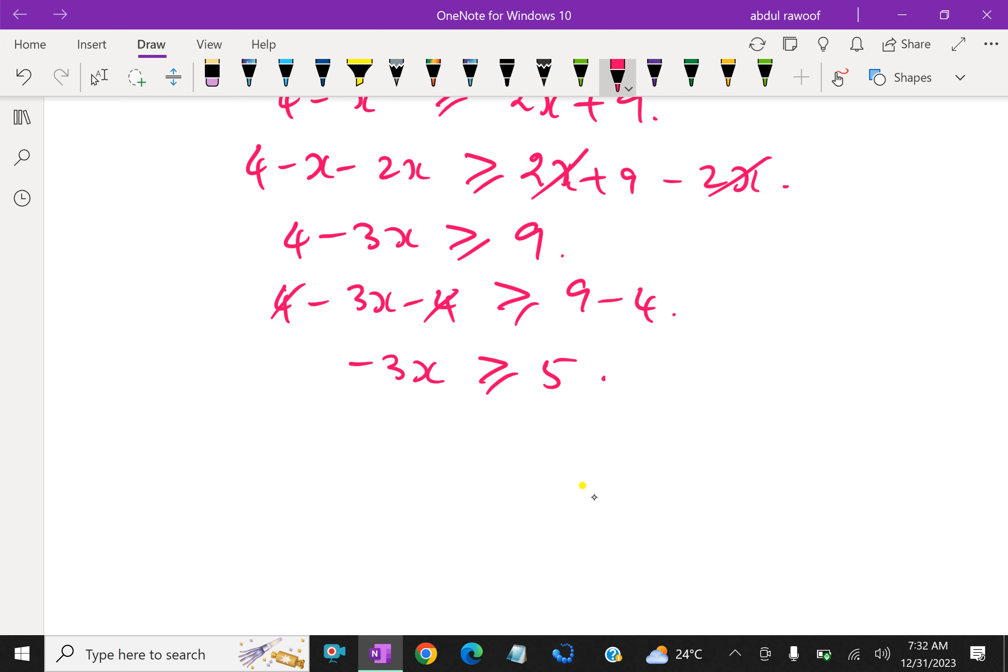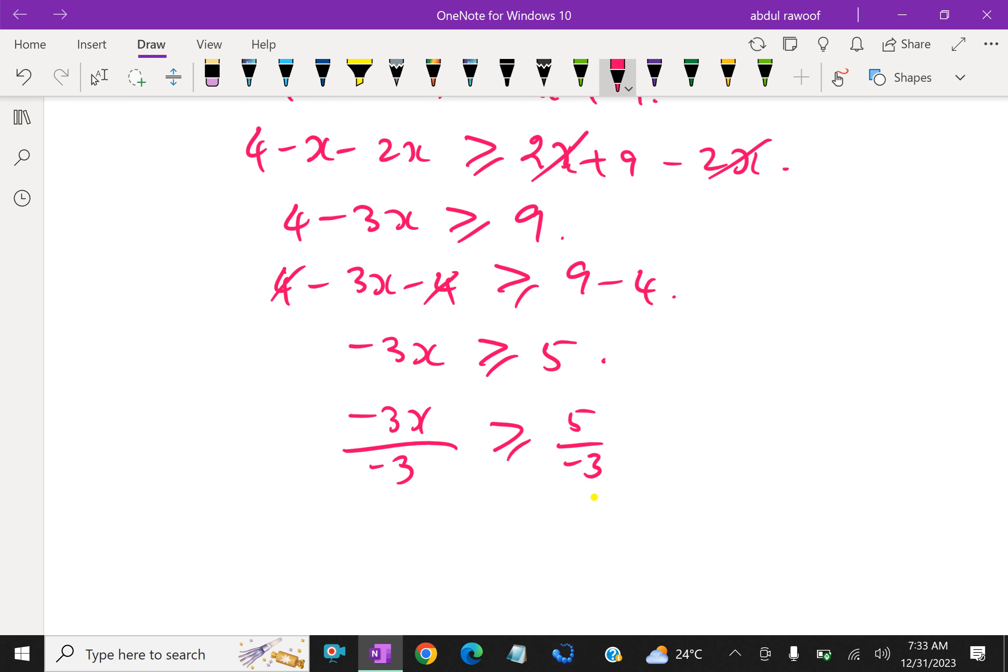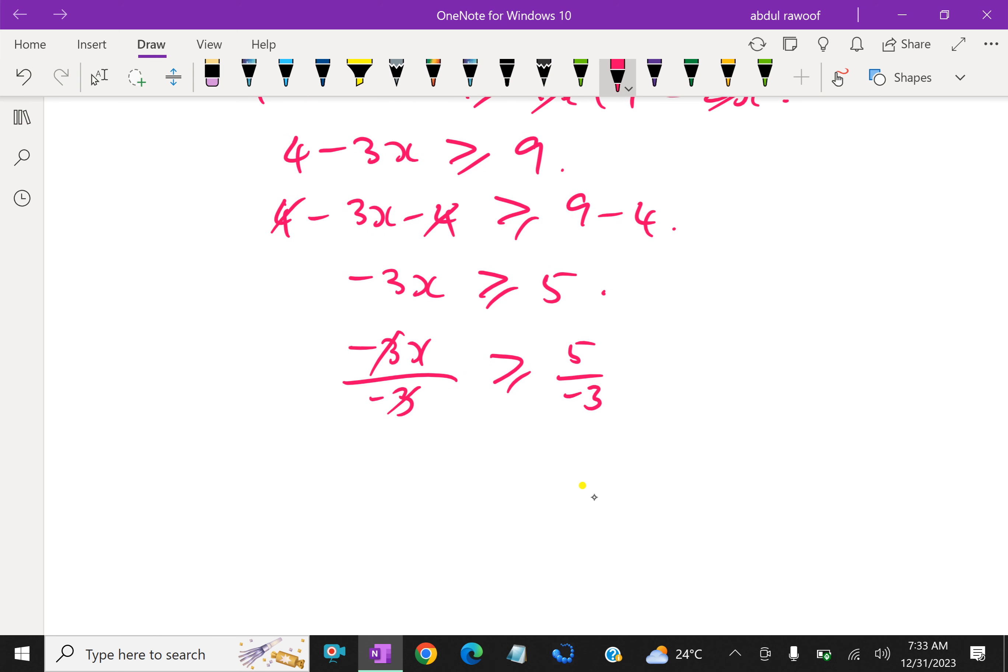Then dividing by minus 3 on both sides. So by division, the sign interchanges here. Then x is less than or equal to minus 5 over 3.